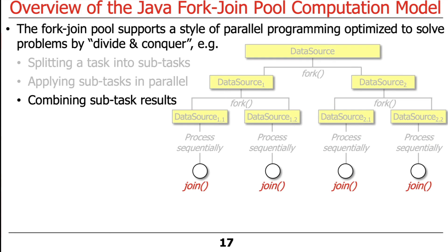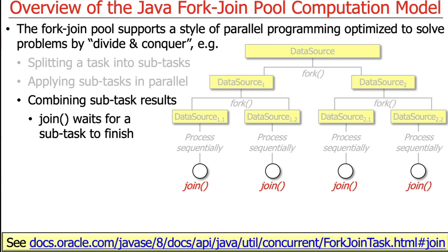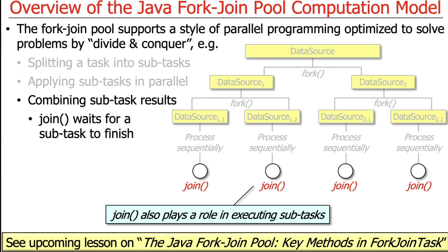The other capability provided by the ForkJoin Framework is combining subtasks together using join. Join is the mechanism to combine things, and it waits — logically — for subtasks to finish. It actually does something very magical: it doesn't really wait in a blocking sense; it sort of logically waits. And because join doesn't actually block, it also plays a role in executing subtasks, which is a really cool optimization built into the ForkJoin Framework.